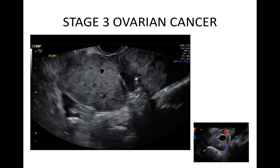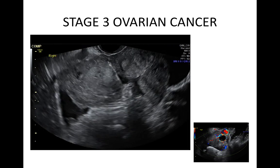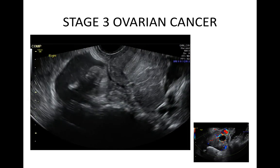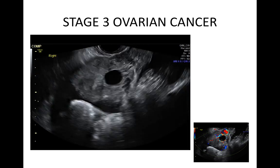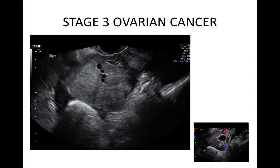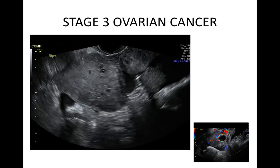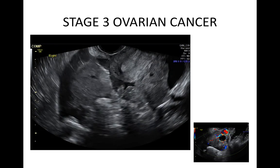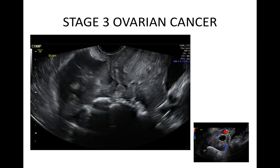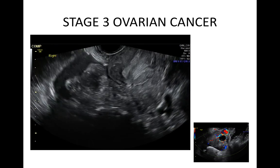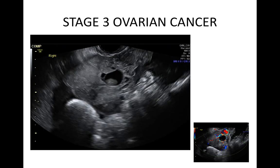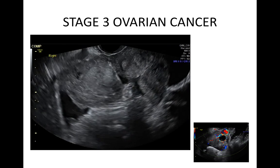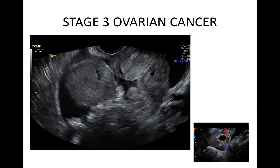This advanced ovarian malignancy is a solid lesion, as more than 80% of the lesion is solid rather than cystic. It is irregular both in external outline and the internal cystic spaces. The vascularity was strong in areas. There is shadowing and there is ascites.